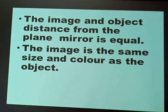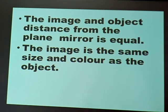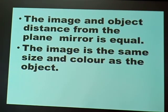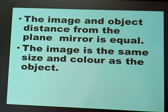What does that mean? Look at yourself through a mirror — your color does not change. If you are brown, the image will also be brown. If you are darker skinned, the image will also be dark skinned. If you are wearing a white shirt, the color of that shirt comes through. That is why we say the image is the same size and color as the object.